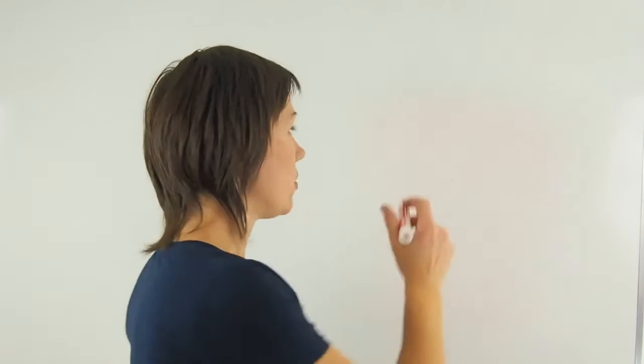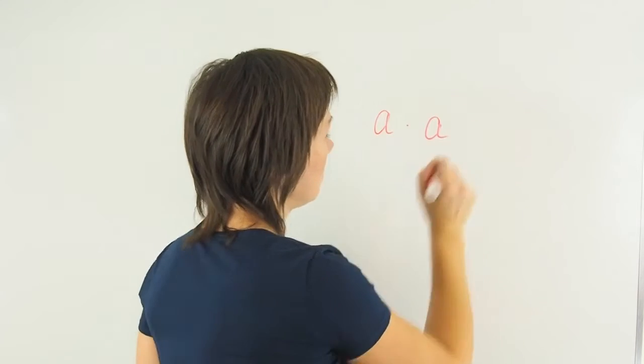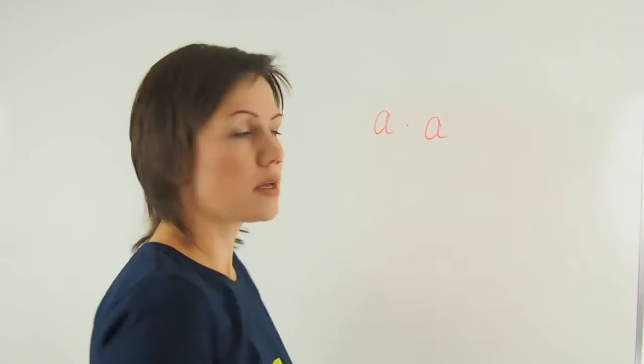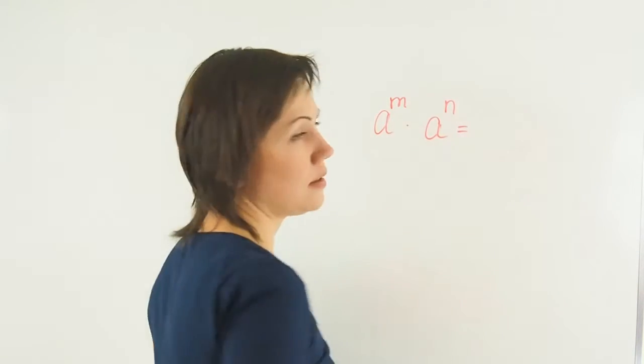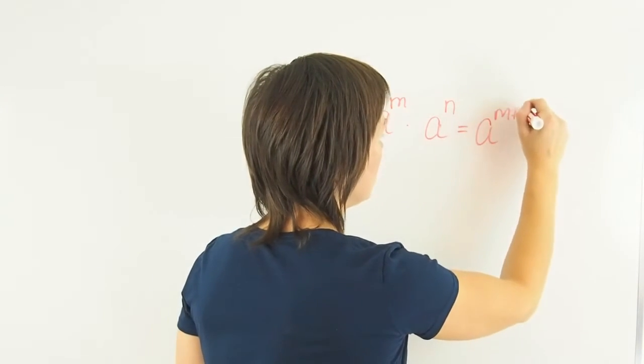Now let's continue with general exponent laws. So if I have the same base and I multiply two of the same bases with the same or different exponents, then I will keep the base and add the exponents.